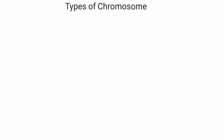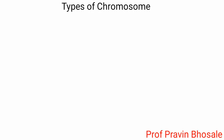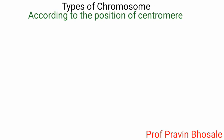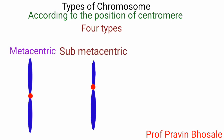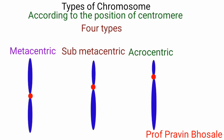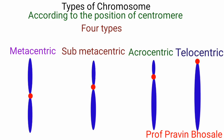Types of chromosome: according to the position of the centromere, chromosomes are of four types — metacentric, submetacentric, acrocentric, and telocentric.